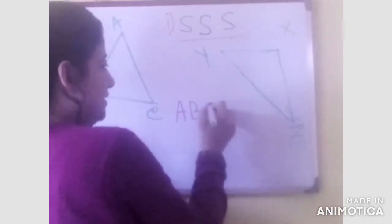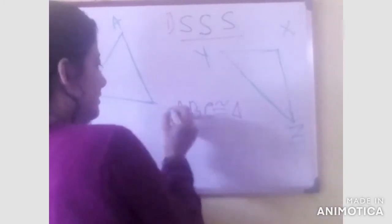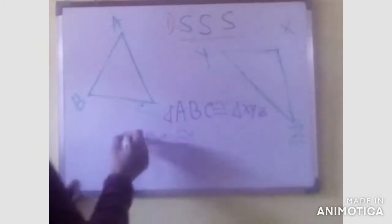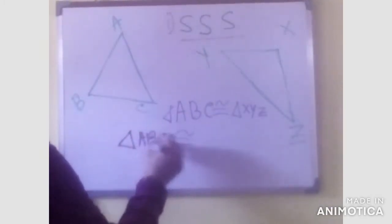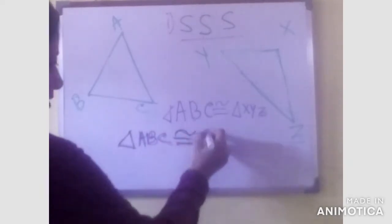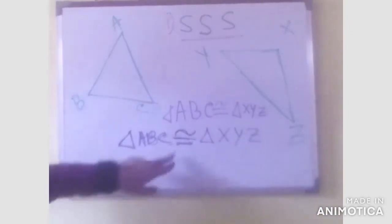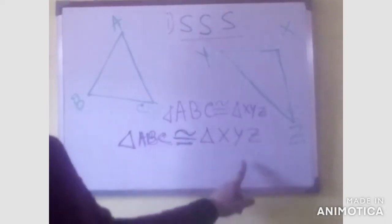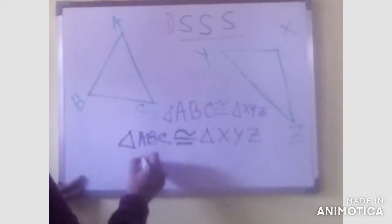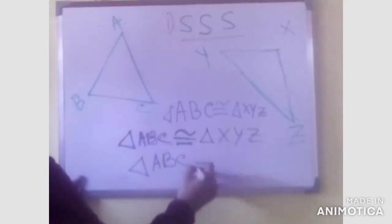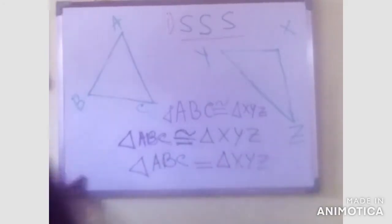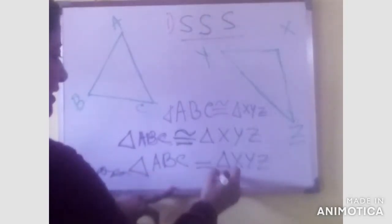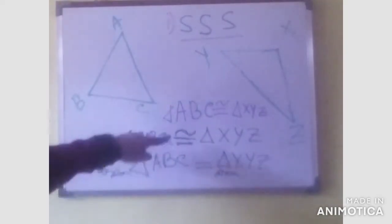So we write: triangle ABC is congruent with triangle XYZ. That means we can also say that the perimeter of triangle ABC is equal to the perimeter of triangle XYZ, and as well as the area of triangle ABC is equal to the area of triangle XYZ when they are congruent.